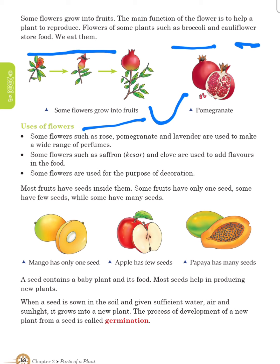Most fruits have seeds inside them. Some fruits have only one seed, some have few seeds, and some have many seeds. Mango has only one seed, apple has few seeds, and papaya has many seeds. A seed contains a baby plant and its food. Most seeds help in producing a new plant. When a seed is sown in the soil and given sufficient water, air and sunlight, it grows into a new plant. The process of development of a new plant from a seed is called germination.